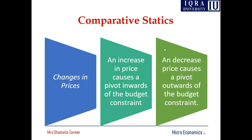The second comparative static analysis is about changes in prices. Whenever the income of the person is the same — wages have not changed — but prices are going to change, either the price of x or the price of y. Whenever we say the price of x will change, it means the price of y and income will remain the same. And if we say the price of y will change, it means the price of x and income will remain the same.